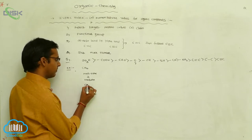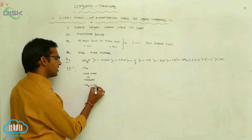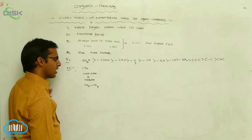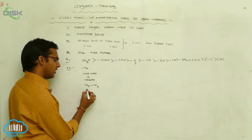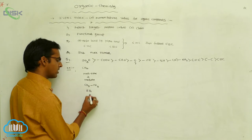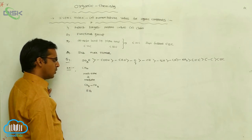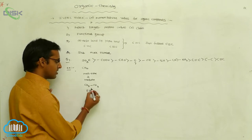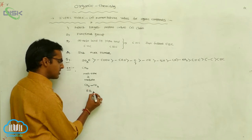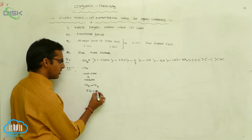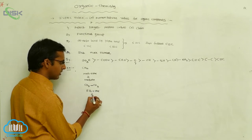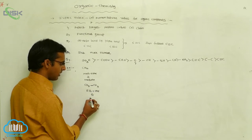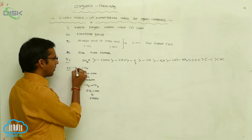Next example: CH₃–CH₃. How many carbons are present? Two carbons. The root word for two carbons is 'eth'. Which bonding is present? Single bond. Single bond means the suffix is '-ane'. So the total IUPAC name is ethane.